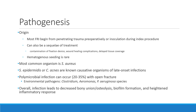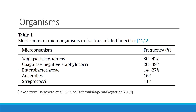Overall, infection leads to decreased bony union and osteolysis, bacterial biofilm formation, and a heightened inflammatory response. The most common microorganisms in fracture-related infections are Staph aureus, followed by coagulase-negative Staph, anaerobes, and Streptococci.